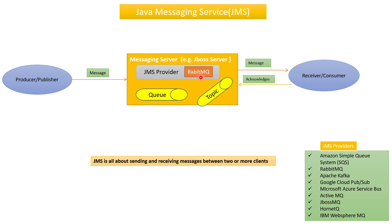RabbitMQ and ActiveMQ work using queues and topics. If one producer produces a message and one consumer consumes it, that is point-to-point communication, handled by a queue. If one producer produces a message and multiple consumers consume it simultaneously, that is called pub-sub (publish-subscribe), handled by a topic. So we have two types of communication: point-to-point and pub-sub (one-to-many).